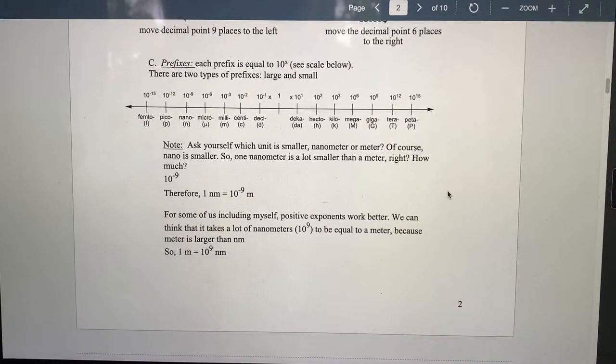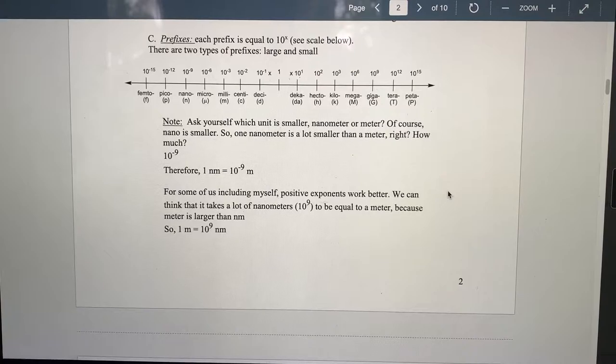Prefixes, every exponent has a name. So, for example, six is minus six, 10 to the minus six is micro, 10 to the minus three is milli, and so on and so forth. On the right side, those are the large one, 10 to the third is kilo, mega 10 to the six, and so on and so forth.